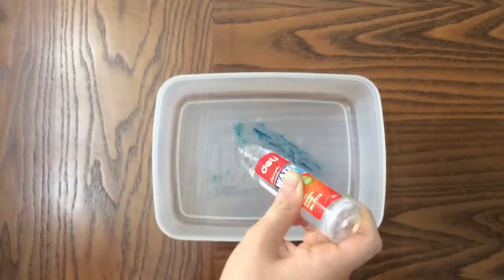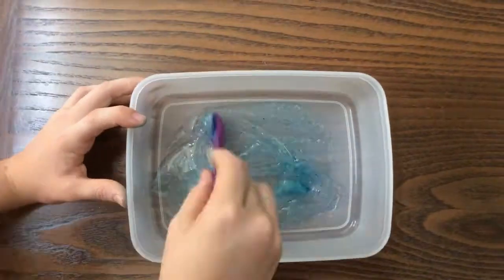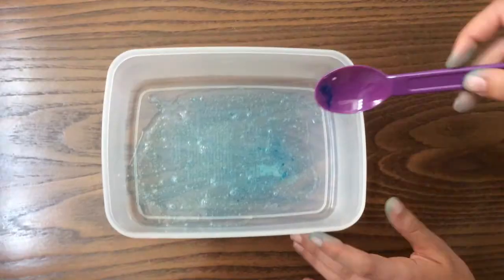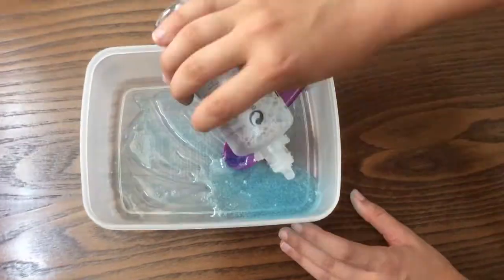First, how do you make it? First, we add PVA glue to food coloring. Then we add a few drops of boric acid, which we are using as eye contact solution.